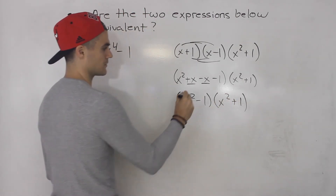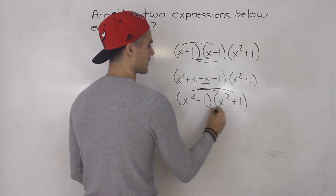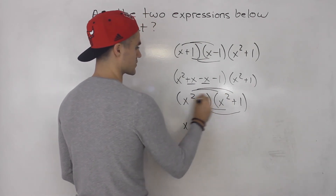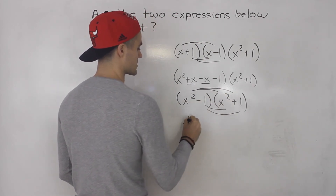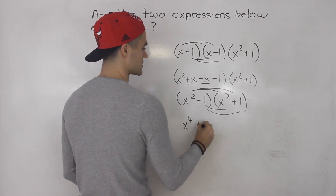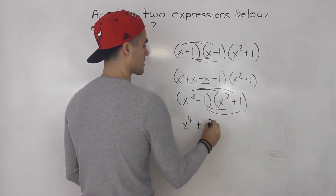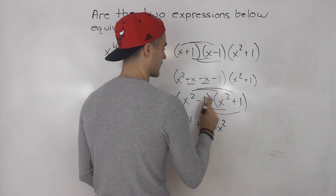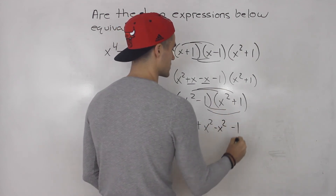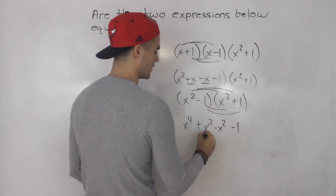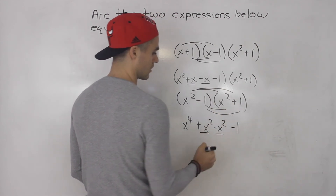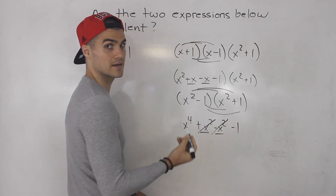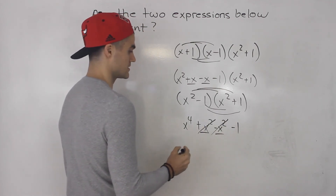Then we would FOIL out these two brackets. We would end up with x squared times x squared is x to the fourth, then minus x squared plus minus x squared, and then minus 1 times positive 1 gives us minus 1. Notice that these two are like terms and they cancel out — x squared minus x squared is 0.